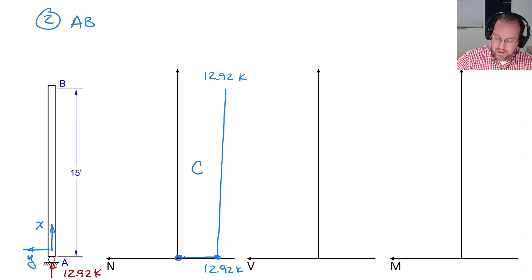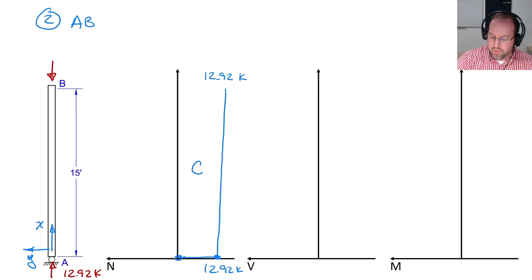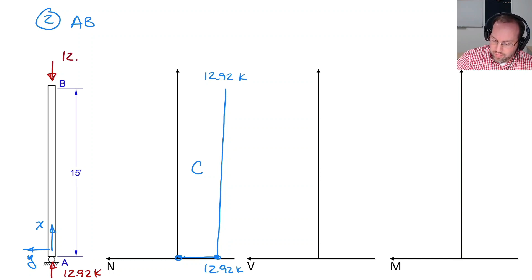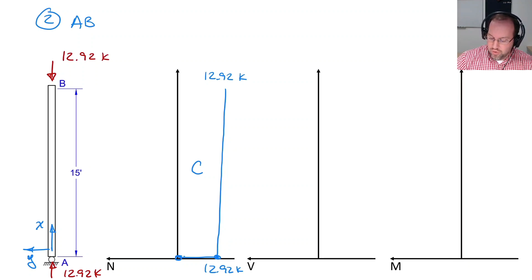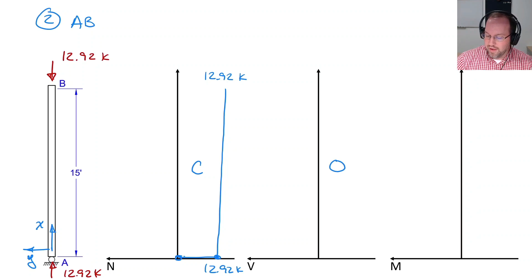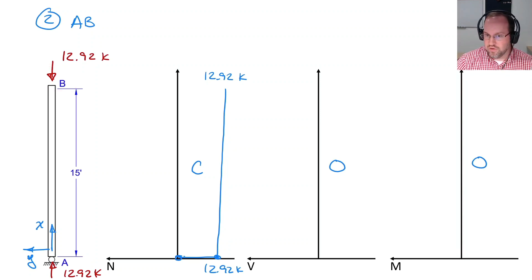Since the axial value is negative, this represents compressive stress in the column. A compressive force at end B acts down into the column — 12.92 kips in compression. For the shear diagram, there is no load in the y direction so shear is zero throughout. With no shear and no concentrated moments, the moment diagram is also zero. At end B, the only internal force is the axial force of 12.92 kips in compression.